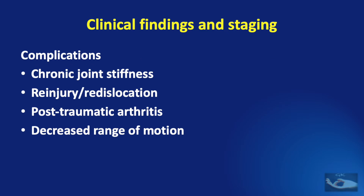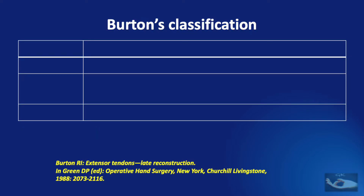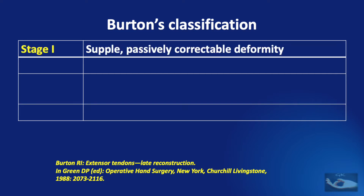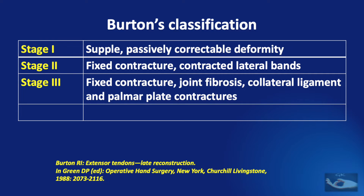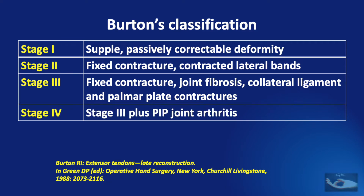If left untreated, the Boutonniere deformity can develop complications like chronic joint stiffness, re-injury or re-dislocation, post-traumatic arthritis, and decreased range of motion. Burton has classified the Boutonniere deformity into four clinical stages. Stage 1: PIP joint is supple and passively correctable. Stage 2: fixed contracture of the PIP joint with contracted lateral bands and tight DIP joint. Stage 3: fixed contracture, joint fibrosis, collateral ligament and palmar plate contractures. Stage 4: features of Stage 3 plus PIP joint arthritis.